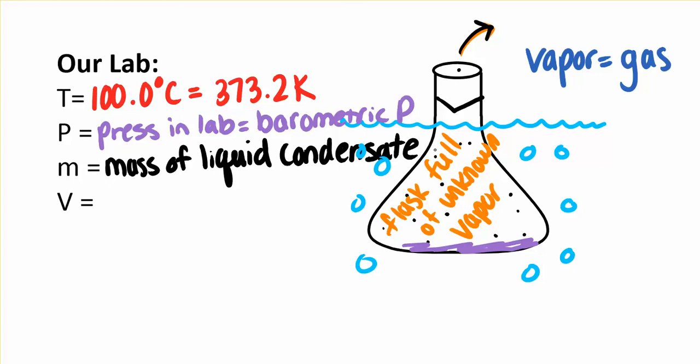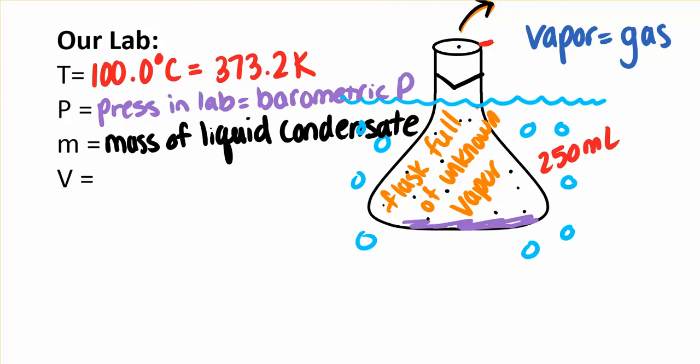The last one is a little tricky too. Our flasks that we're using say 250 milliliters on them. So you might just think, oh, the volume is 250 milliliters. But it's not. These flasks are not meant to measure 250 milliliters all the way up to here. In fact, they're just an estimate of that anyway. So to get the true volume of the gas that it occupied, what we'll do is determine the true volume of this flask.